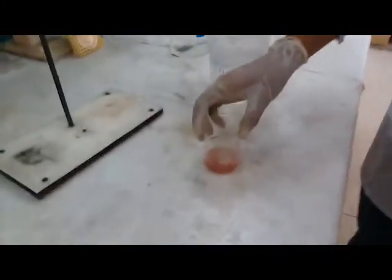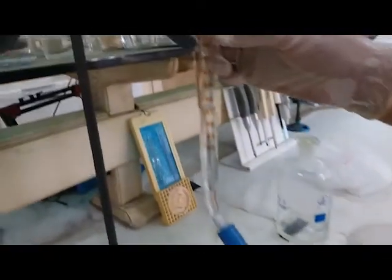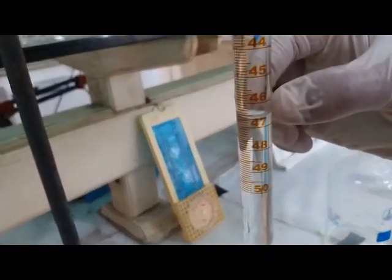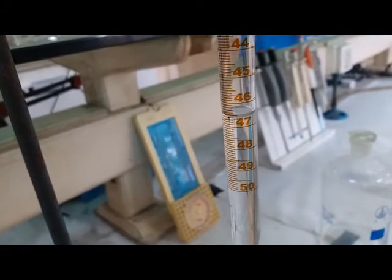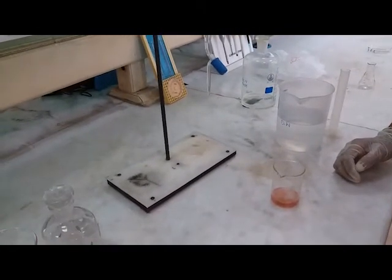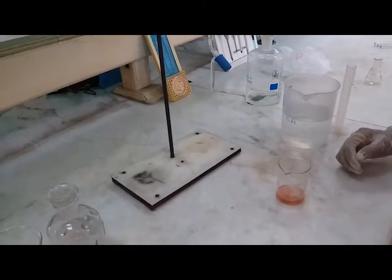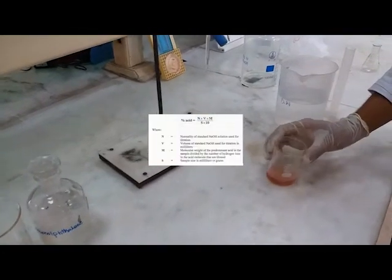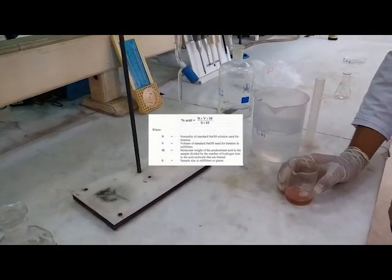We will note the final reading of the base, which will give us the idea of how much base is used. Now we will put this in the formula and we'll find the exact value of titratable acidity of the fruit. Thank you.